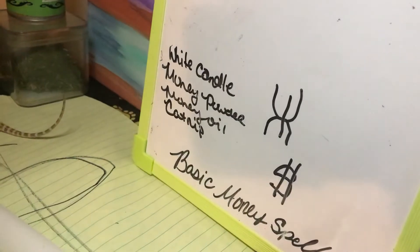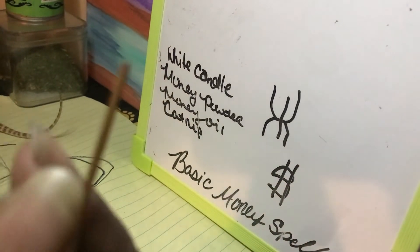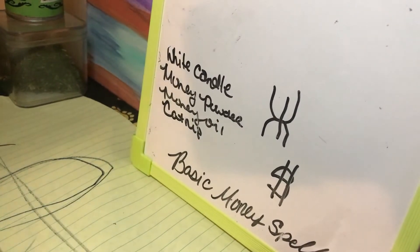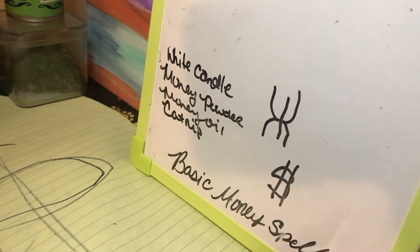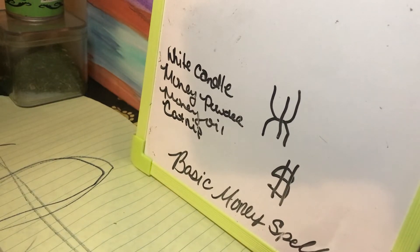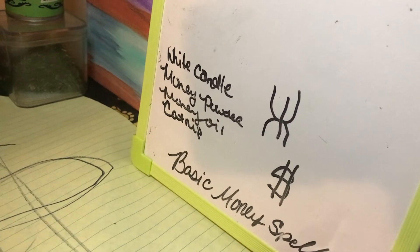You're going to use whatever you have around. I usually use the tip of an incense — I have a money incense burning right now. And I have the baby dragon on the table because I like to get that dragon energy flowing when I'm doing prosperity work. I'm carving the runes into the candle right now.